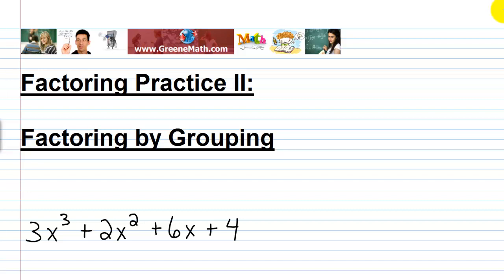We want to continue with some additional practice for our chapter on factoring. The next kind of unit that we came to was factoring by grouping. When do we want to use factoring by grouping? We want to use that when we have four terms or a four-term polynomial.